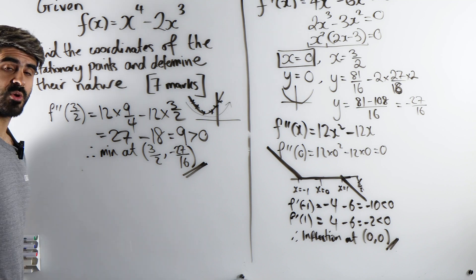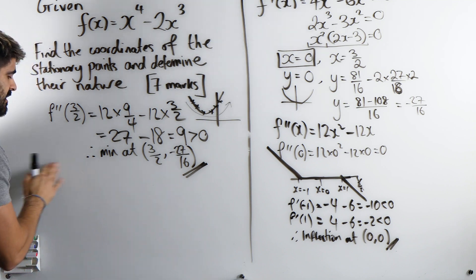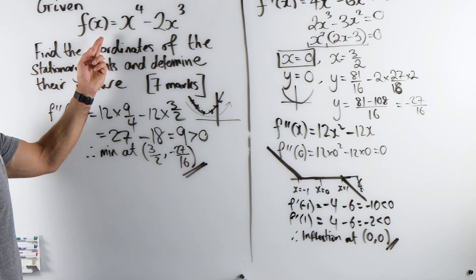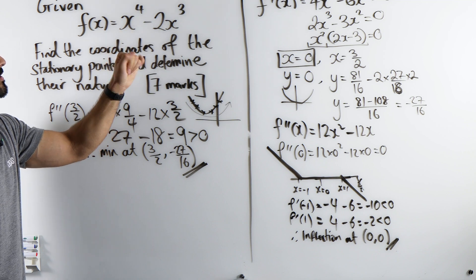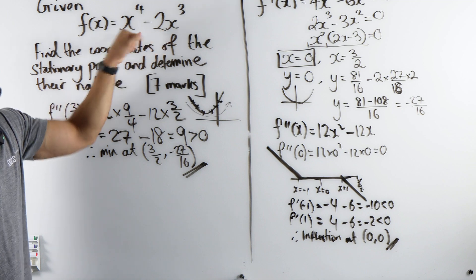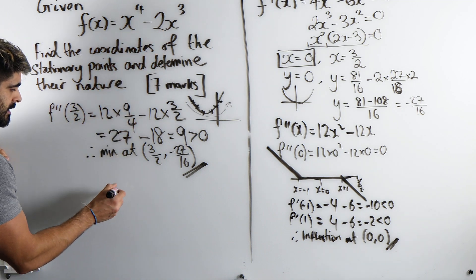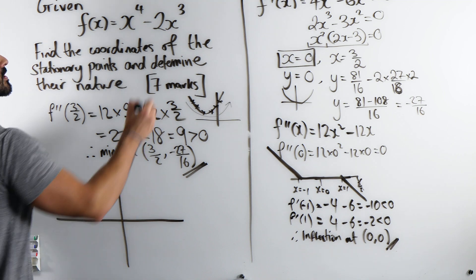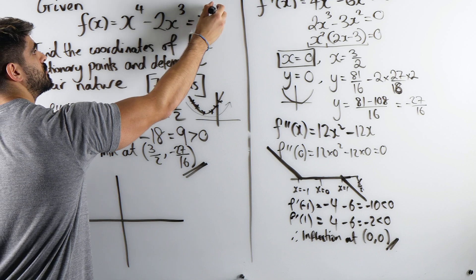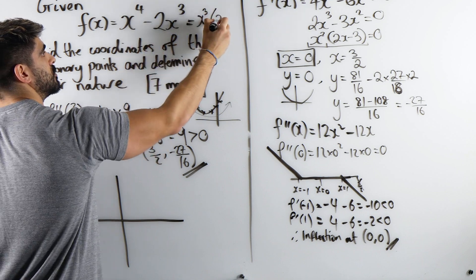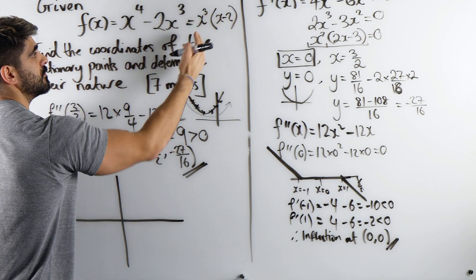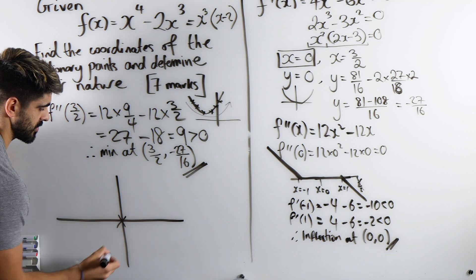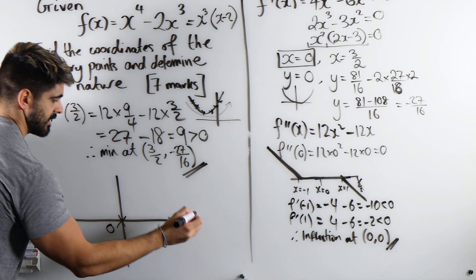Now this is the end of the question, but as a bonus guys, let's sketch it. So how would we sketch this? To sketch it, we'd want to find out the roots. But what's cool about this is when x is 0, y is 0. But what we might want to do is factorize. If we factorize this, we get x cubed, and then you get x minus 2. If you make that equal 0, you're going to get x is 0 and x is 2. So across the x axis here and here.